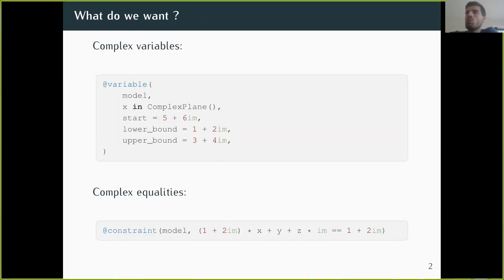What do we mean by addition of complex numbers in Jump? We want the user to be able to create a complex variable. Here, x is a complex number with real and imaginary parts. When you say this is the lower bound, we mean that one is the lower bound of the real part and two is the lower bound of the imaginary part, and same for the upper bounds.